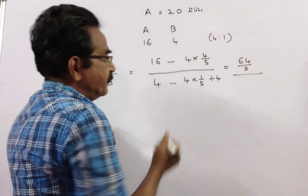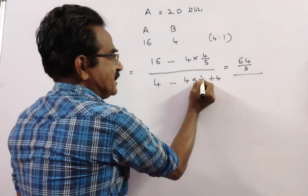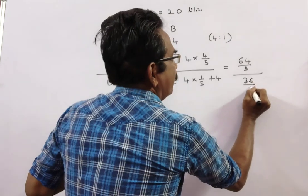This is A. 5 fourths, 20, 20 plus 20, 40 minus 4 minus 4, 40 minus 4, 36 by 5.